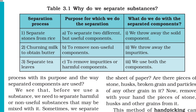Let's look at a table with three columns: the substances in the mixture, the purpose for which we do the separation, and what we do with the separated components. First example: separate stones from rice. The purpose is to remove impurities or harmful components. What do we do with the separated component? We throw away the impurities — the stones are discarded from the rice.